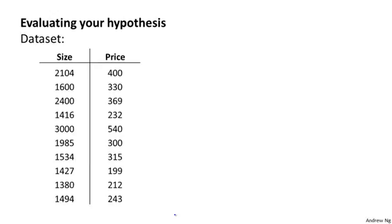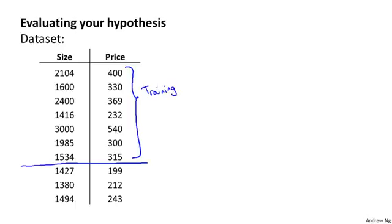The standard way to evaluate a learned hypothesis is as follows. Suppose we have a data set like this — here I've just shown ten training examples, but of course usually we may have dozens or hundreds or maybe thousands of training examples. In order to evaluate our hypothesis, what we're going to do is split the data we have into two portions. The first portion is going to be our usual training set, and the second portion is going to be our test set. A pretty typical split might be around 70% to 30%, with more of the data going to the training set and relatively less to the test set.